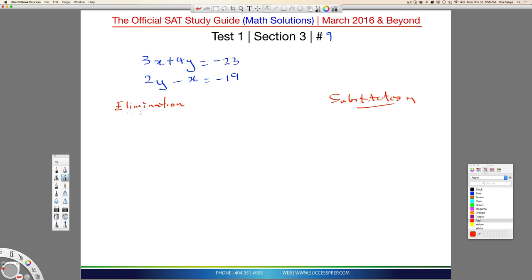For the elimination method, what we're trying to do is simply eliminate one of the unknowns. So, when I look at this, to eliminate something, you want to have the same exact thing but different signs.